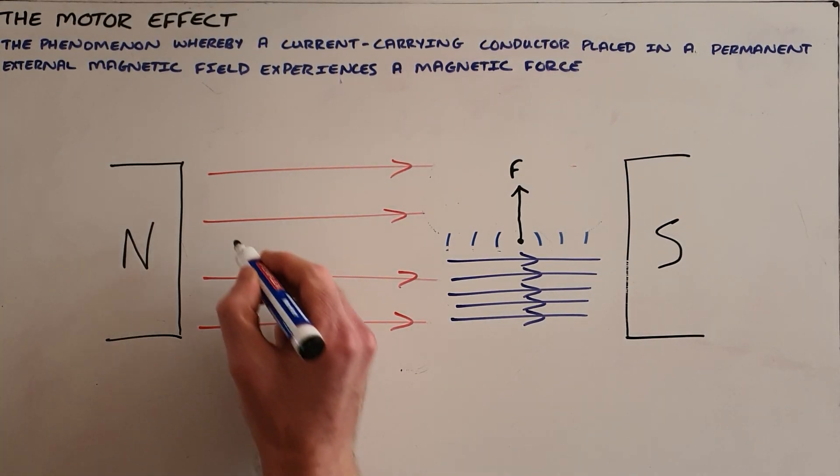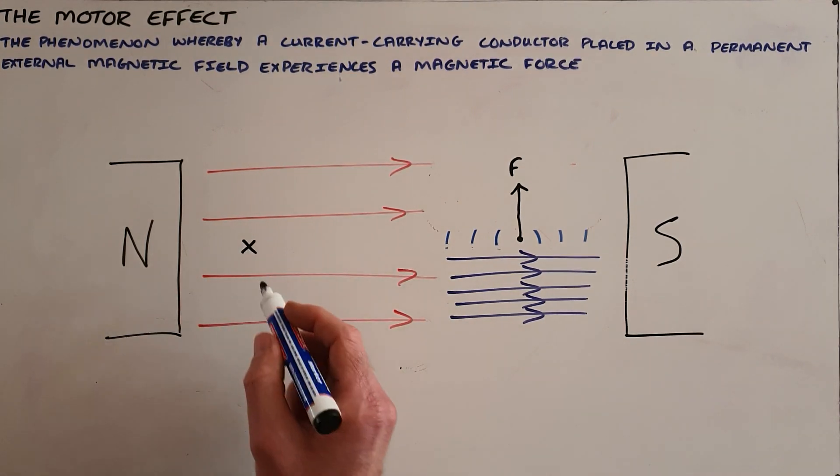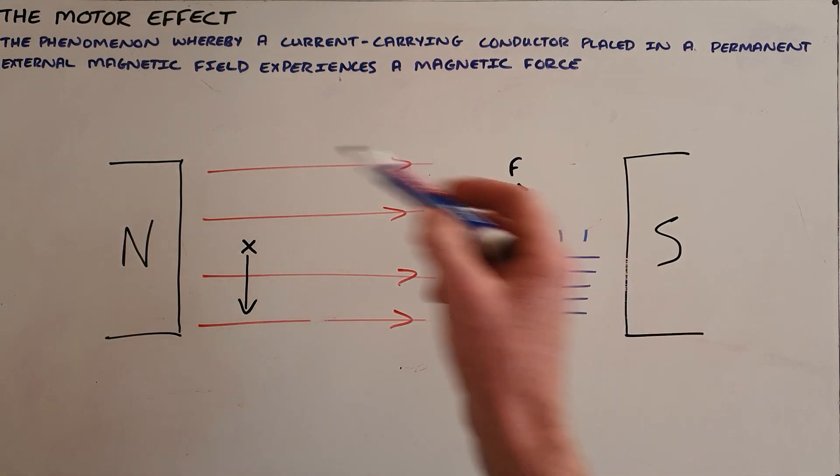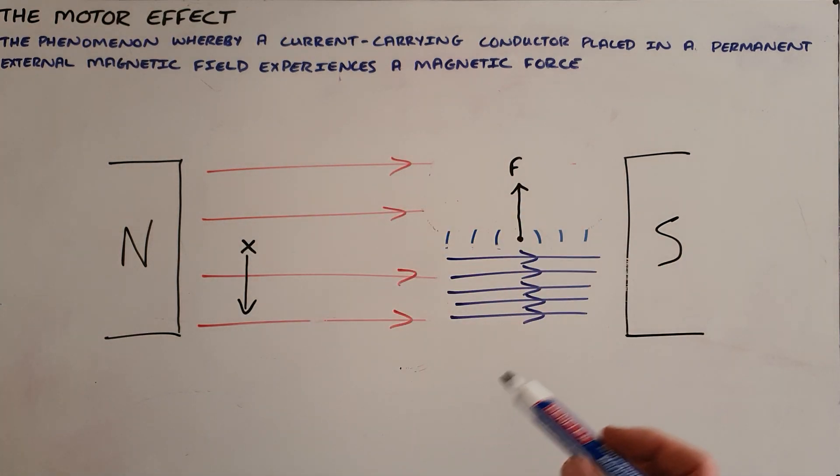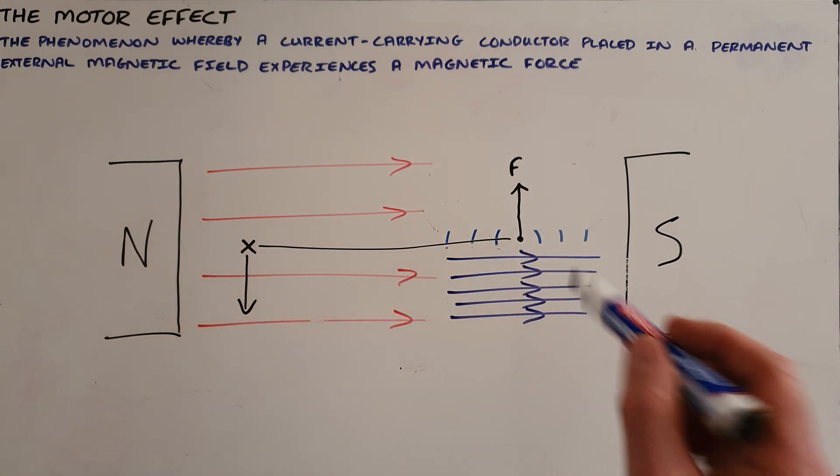It can then be seen that a conductor that is carrying current into the board would experience a force downward, and this is why it is called the motor effect, because what we have is if these two are one in the same conductor.